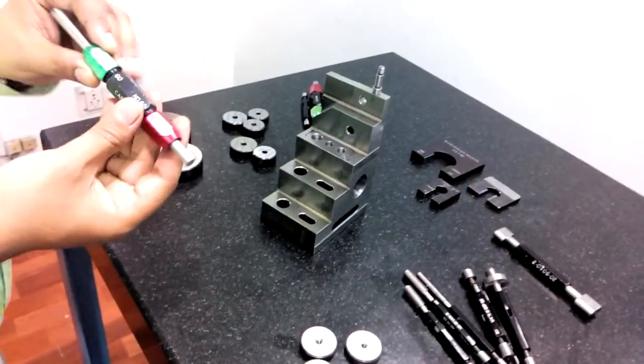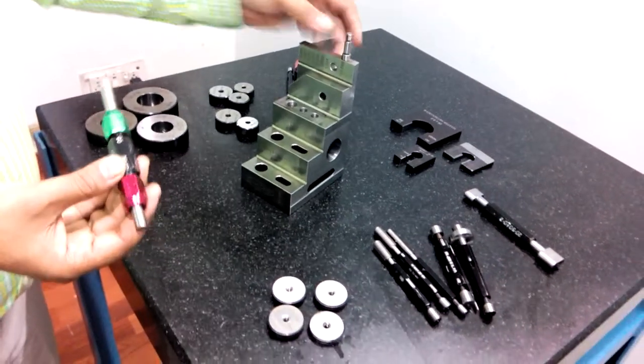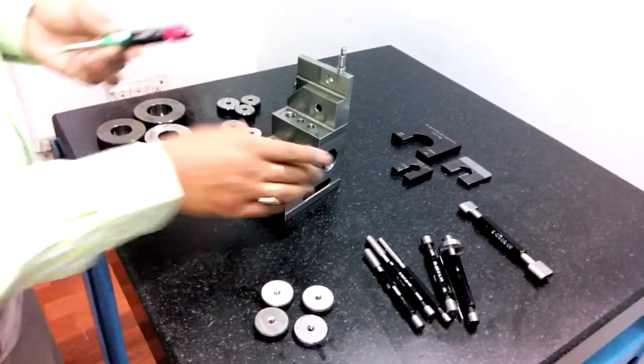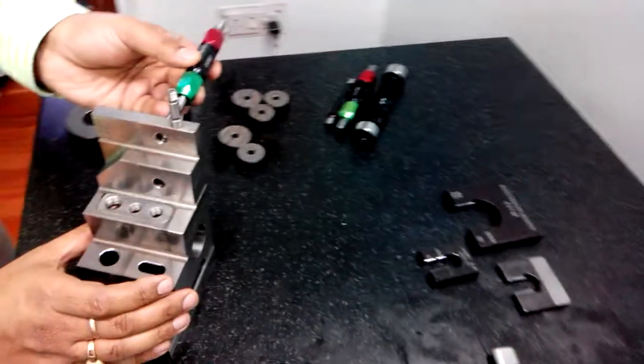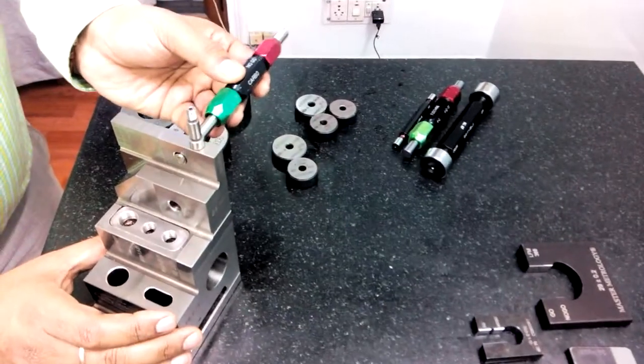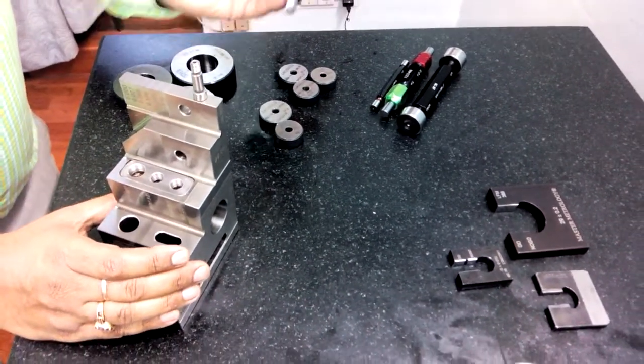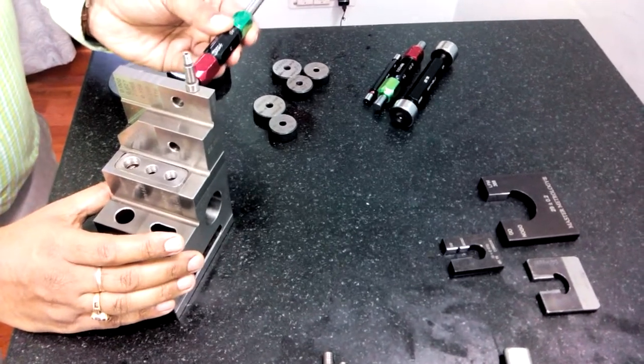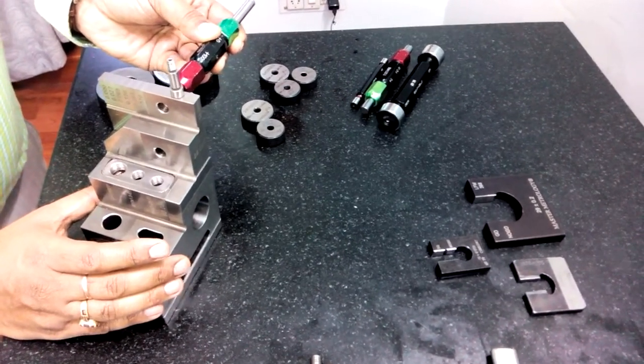This go side will qualify into the hole and this should not. So I will try to qualify this with this hole and it is qualifying, so this is go gauge, it's okay. Now if I am trying to pass no-go, then it is not qualifying. That means this is no-go, so status is okay.